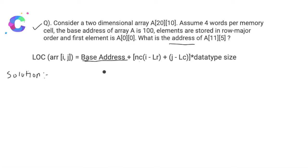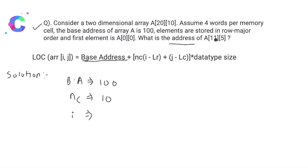To calculate the solution, find the values for each notation in the formula. Base address is given as 100. NC, the number of columns in the array, is 10. For element A[11][5], the value of i is 11 and j is 5. What is the value of LR?